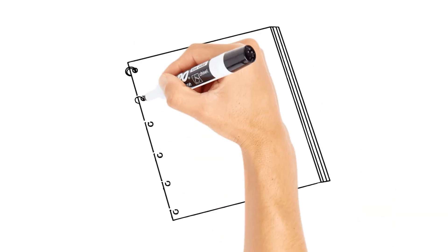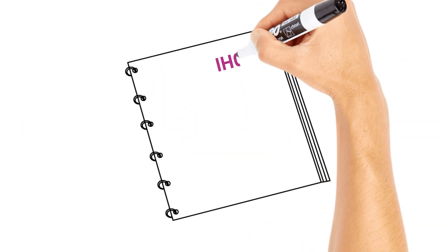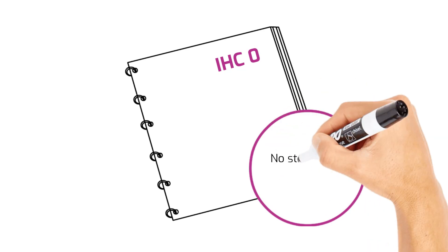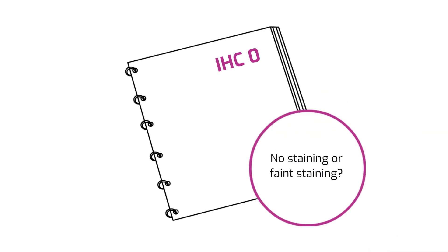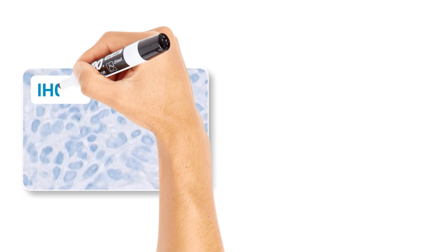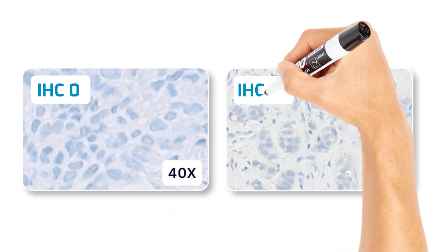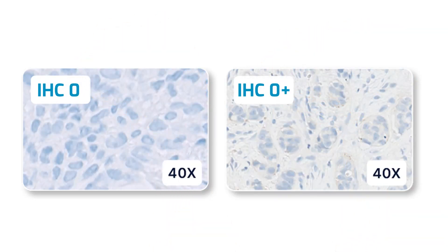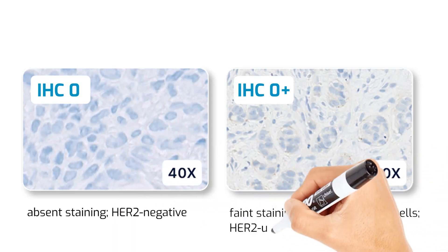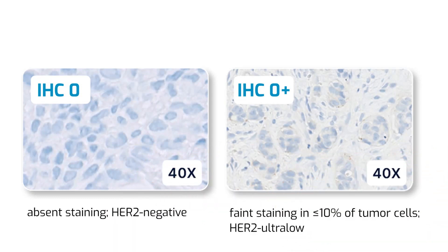When a pathology report says IHC 0, it's important to clarify: is there no staining, or is there faint staining? Consider using the terms IHC 0 plus and HER2 ultra-low to clearly communicate results. HER2 0 means absent staining — HER2 negative. HER2 0 plus means faint staining in less than or equal to 10% of tumor cells — HER2 ultra-low.